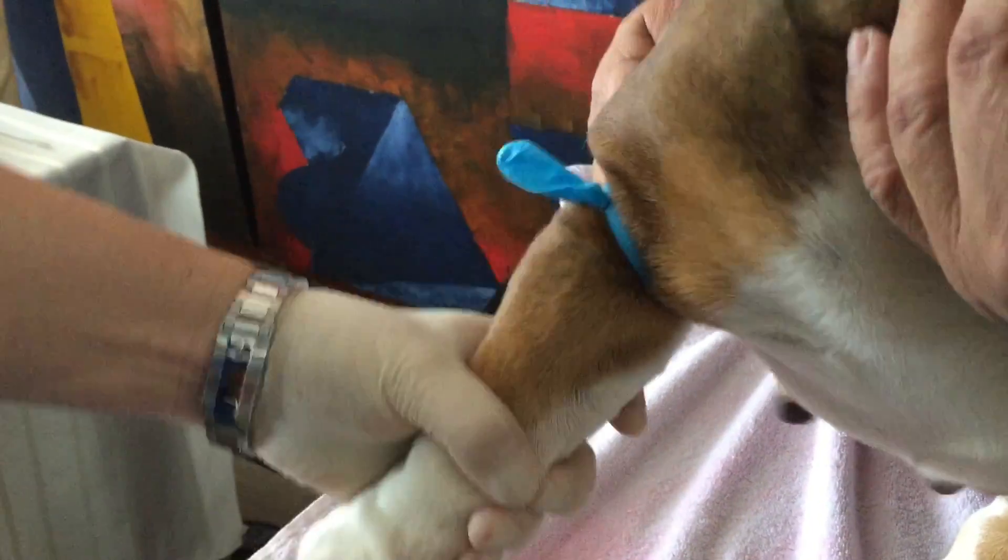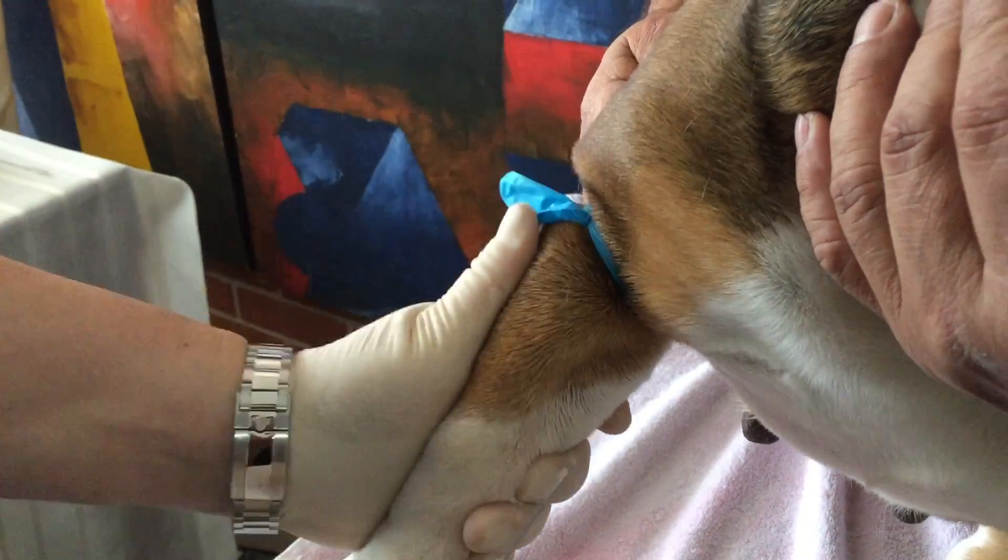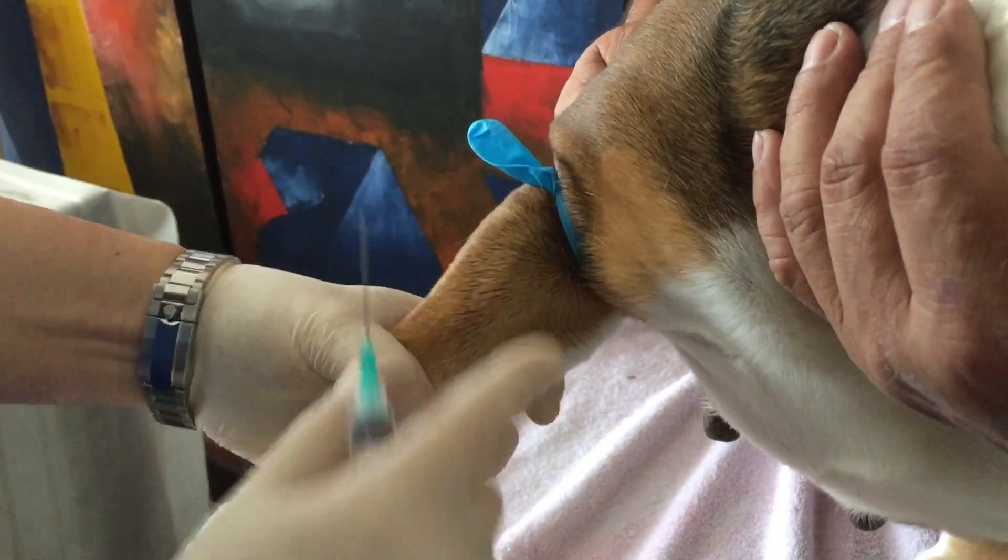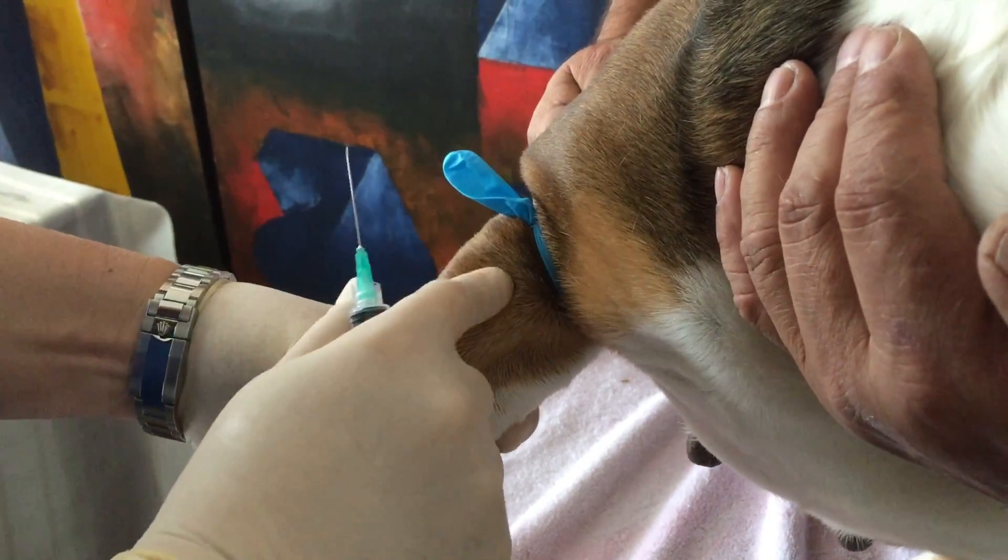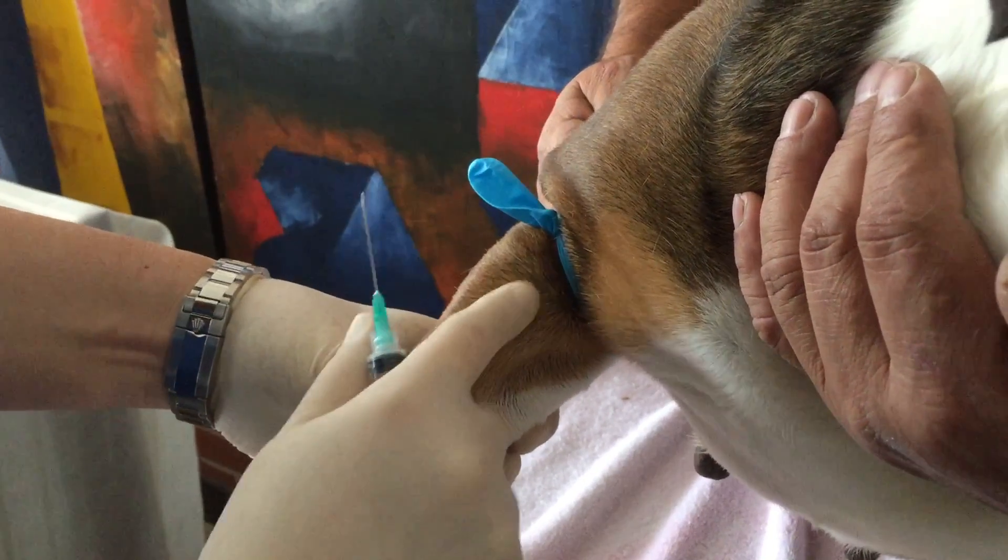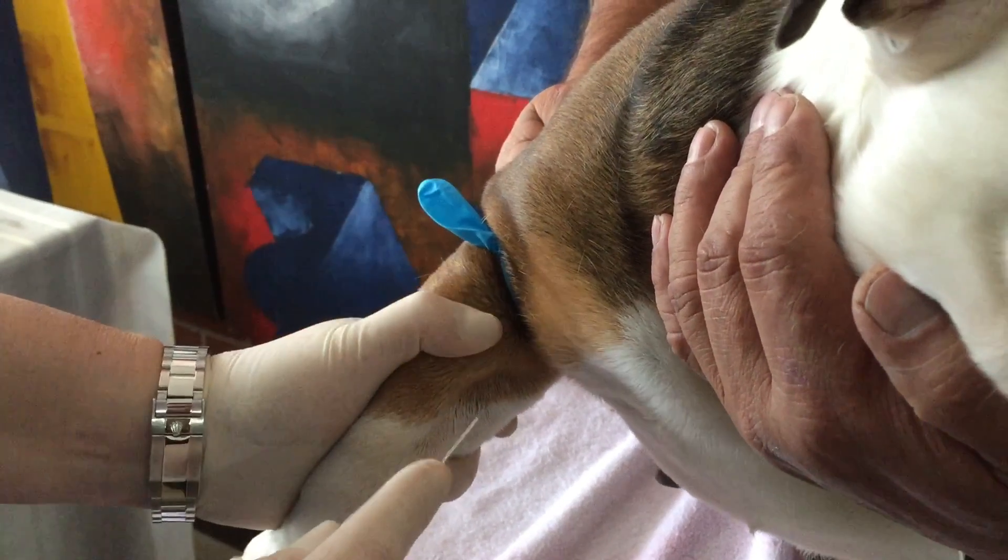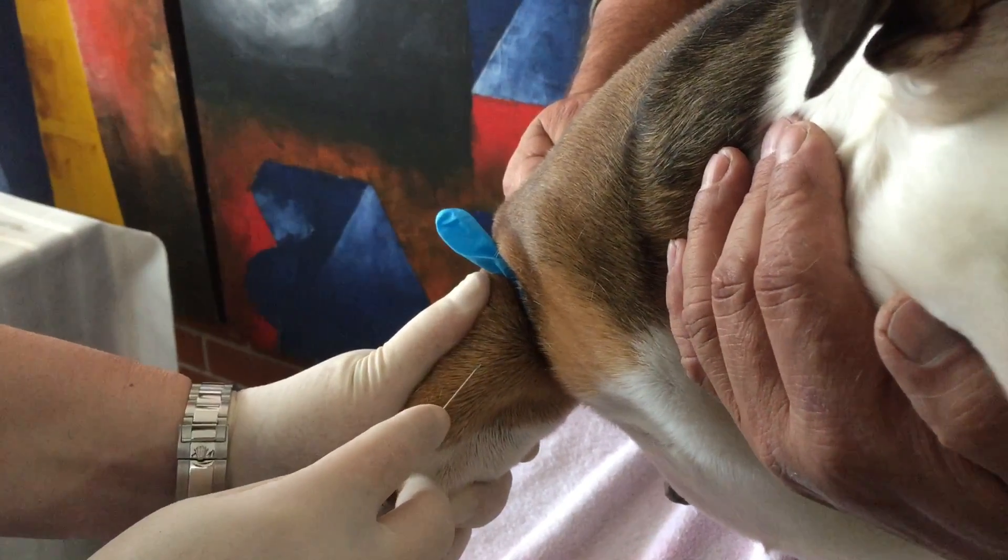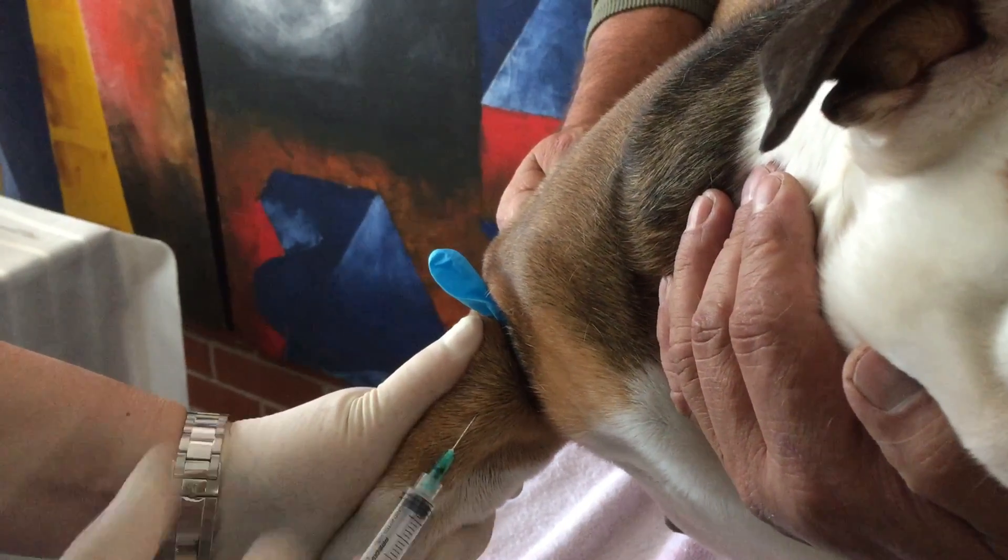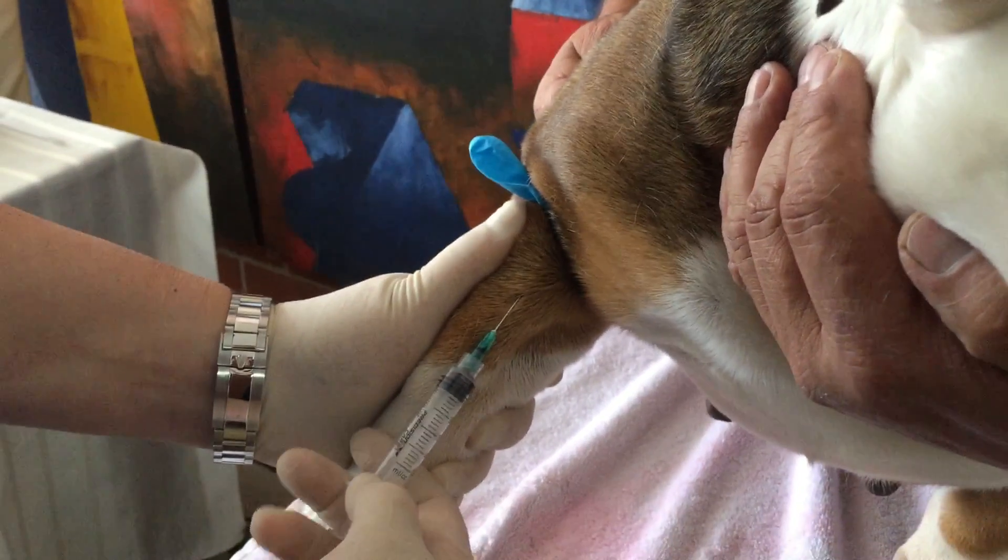You want the hole facing you. And you want to feel the vein. And some dogs, it's very hard because you can't even see them or feel them. But, practice makes perfect. So, when you feel it, all you do is you put in the tip until you see blood in the needle. And that's all you need to do.